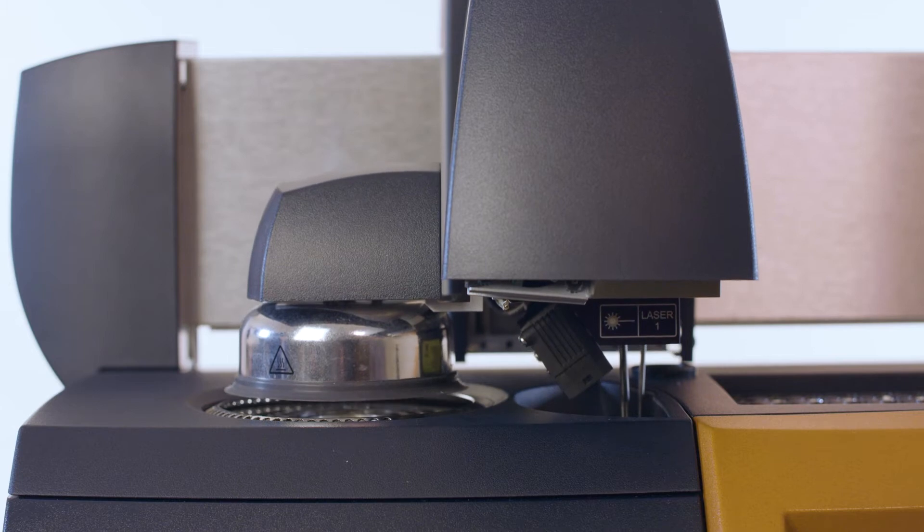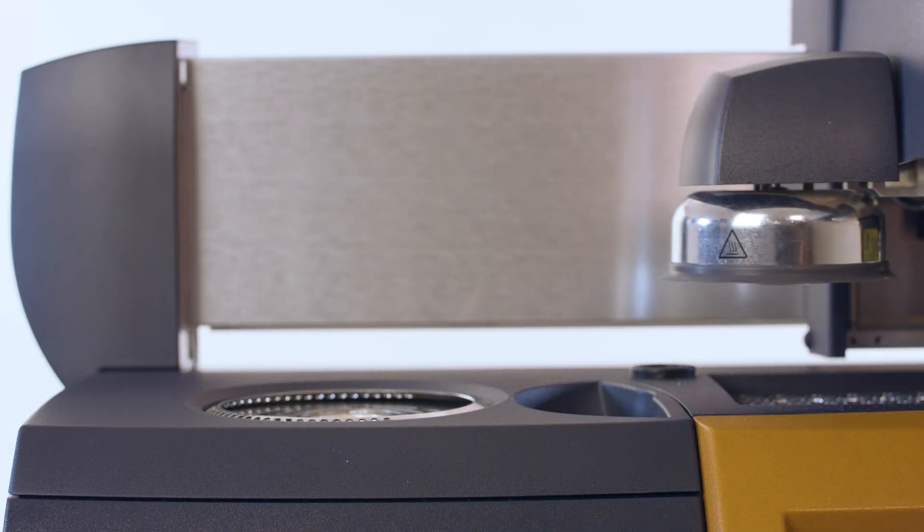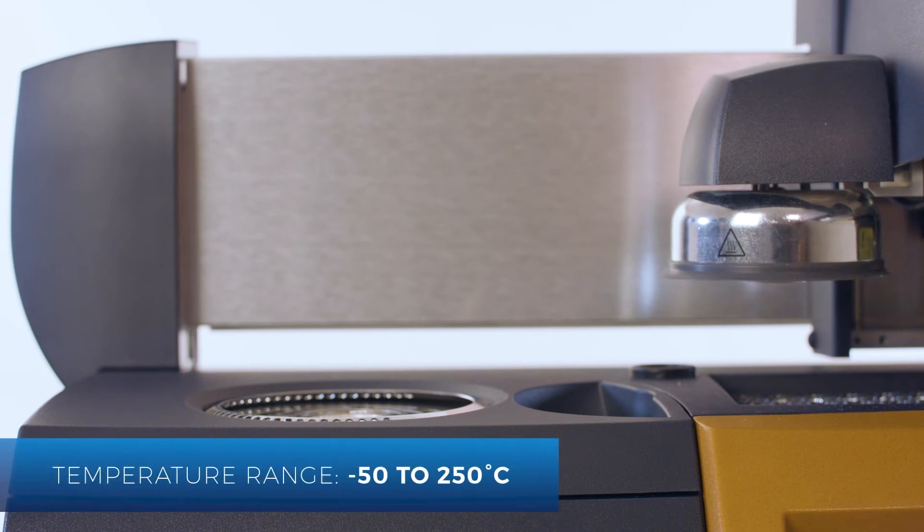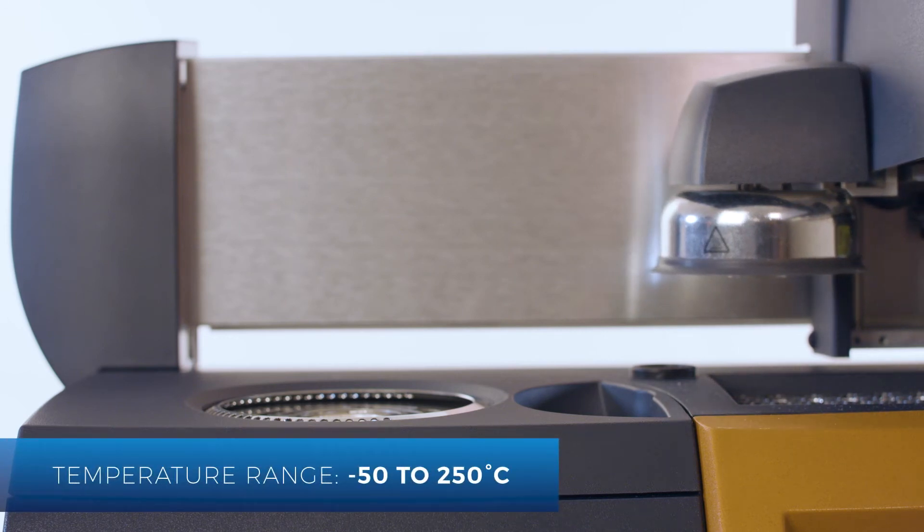Most PCA experiments are run isothermally. PCA experiments can be performed in the temperature range from -50 to 250°C with the dual quartz light guide supplied.